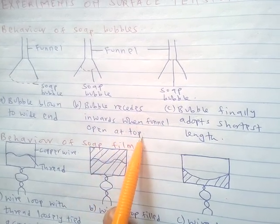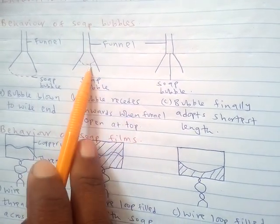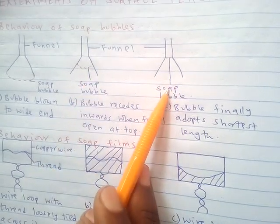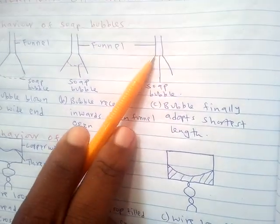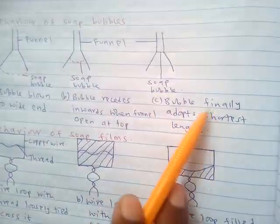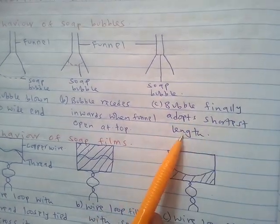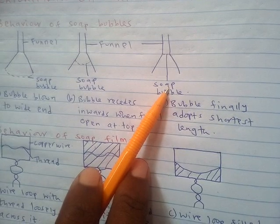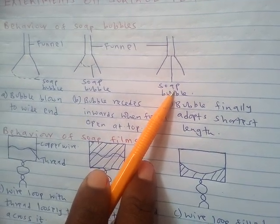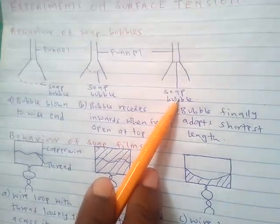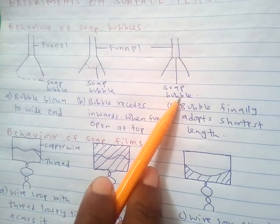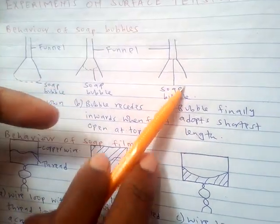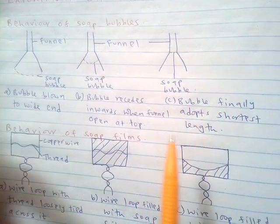When the funnel is left open at the top, after some time the soap bubble finally adopts the shortest length. The reason is because of surface tension, which results from cohesive forces — the soap molecules attract other soap molecules, causing the bubble to move inward and take up the minimum space possible.